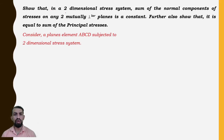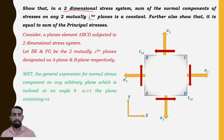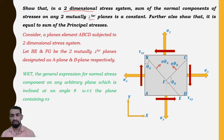Next, we show that in a two-dimensional stress system the sum of normal components of stresses on any two mutually perpendicular planes is constant, and further that it is equal to the sum of principal stresses. Let us consider a plane element ABCD subjected to a two-dimensional stress system.